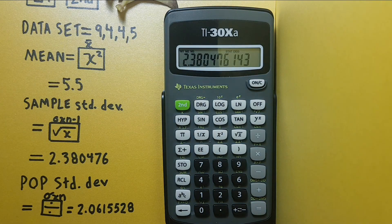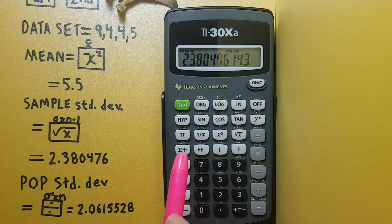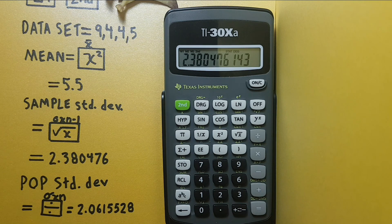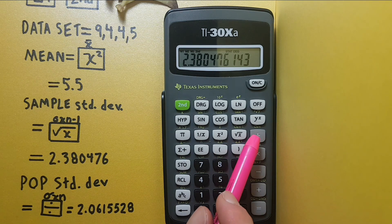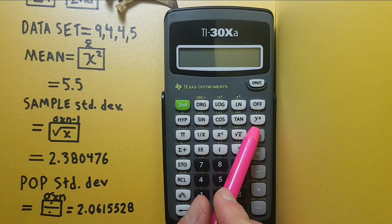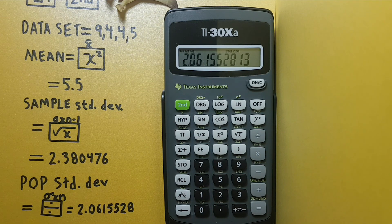And if we want a population standard deviation, again we press the second function, and then the divide key with the sigma x n button over top. This gives us a population standard deviation of 2.061552813.